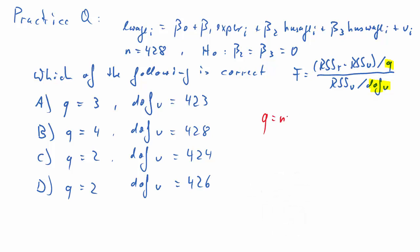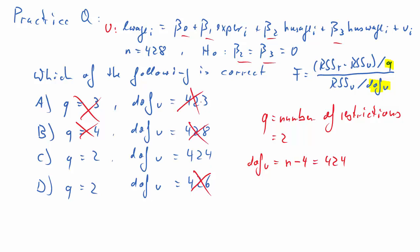So here's the solution. Q really stands for the number of restrictions. And to find that out, we need to consult the null hypothesis. In our case, in the null hypothesis, we are restricting beta2 and beta3 to be equal to 0. So that means we have two restrictions. That means only C and D could be correct. Now, what about the degrees of freedom of the unrestricted model? It's N minus the number of coefficients estimated in the unrestricted model: 1, 2, 3, 4 coefficients. So it's N minus 4. N was 428. So we have 424. That leaves us with only one correct solution, and that is C.